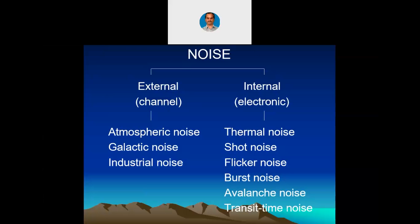Good morning students. We will be starting with module 4 today. Before starting module 4, let us discuss a little bit about noise. We have been discussing noise in general till now. Let me briefly discuss the types of noise which are going to affect our communication system. You are going to study more about noise in detail in other courses, mostly in analog communications. Here I am going to discuss only in the context of information theory, very briefly.